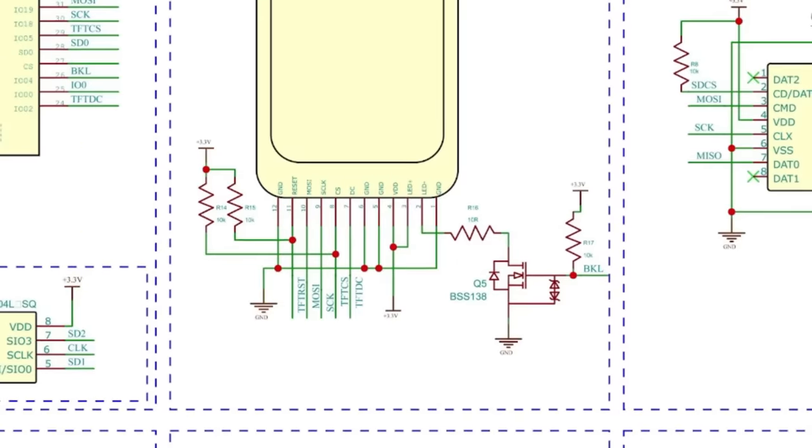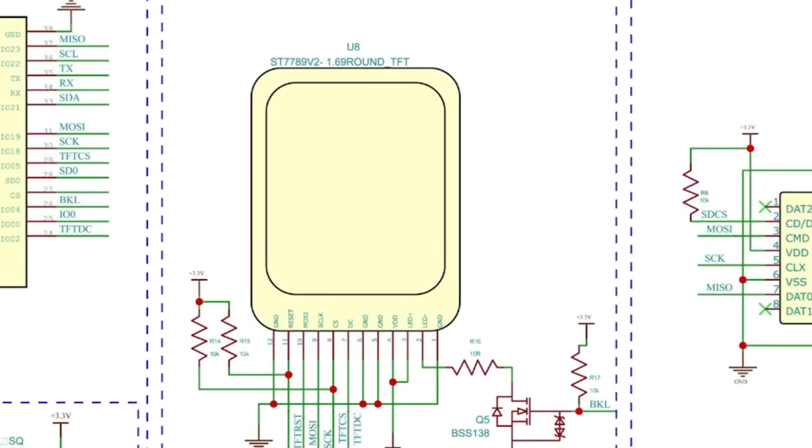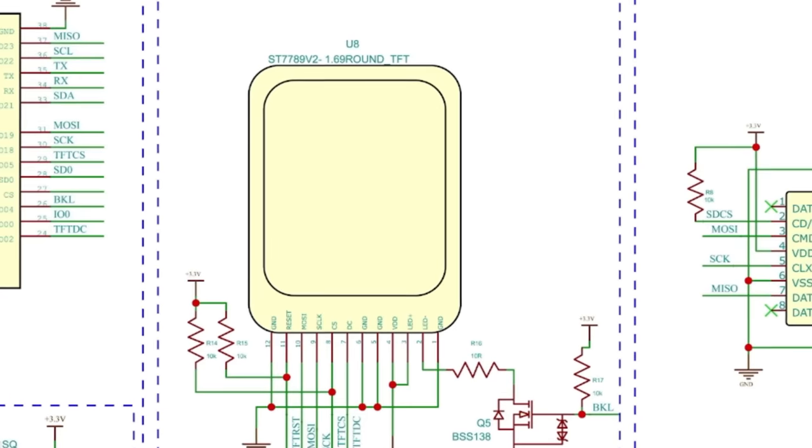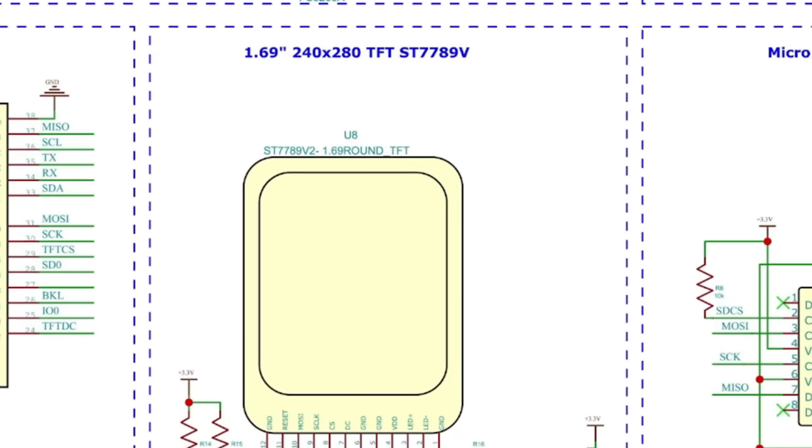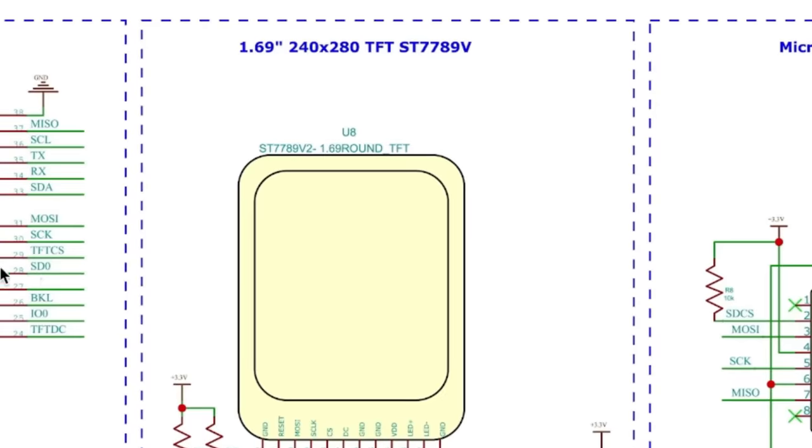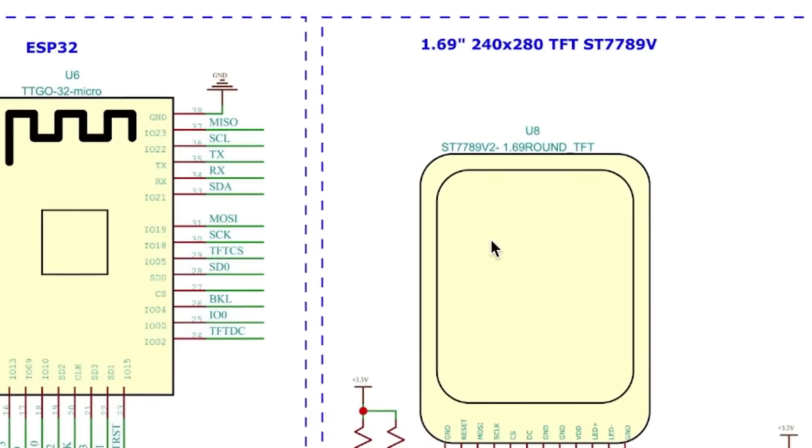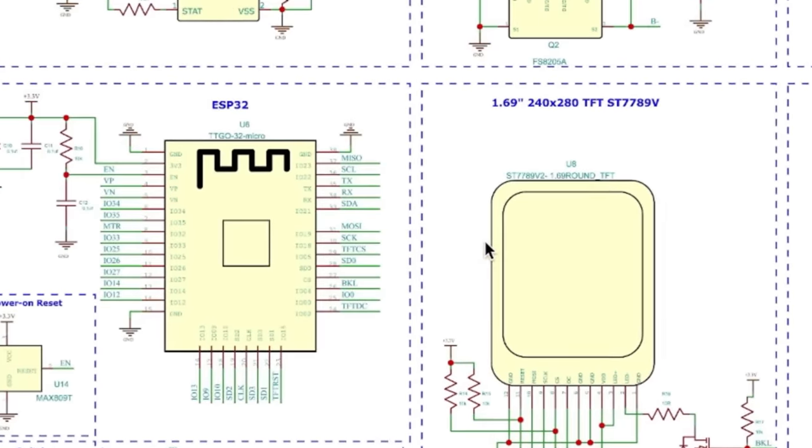And on the top we have a micro SD card and a vibration motor. So the vibration motor is for haptic feedback, and the micro SD card is for future use just in case you want to load up some big files - you can put it on the micro SD card or read it with your ESP32 and display it on the LCD. So this is just a brief overview of all the components present here.